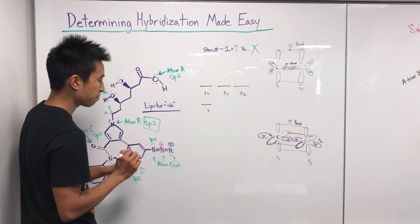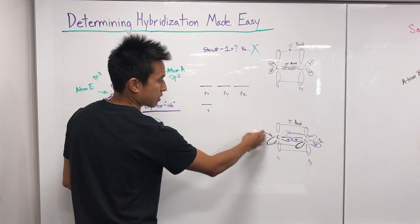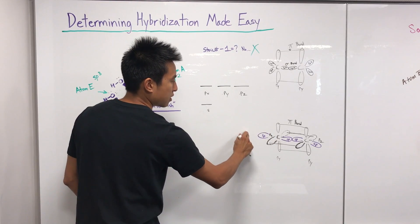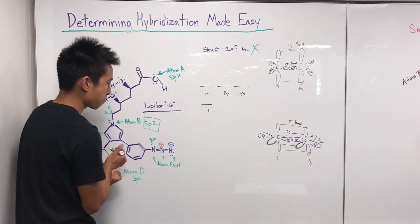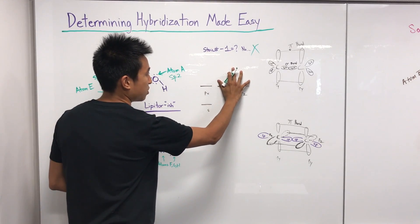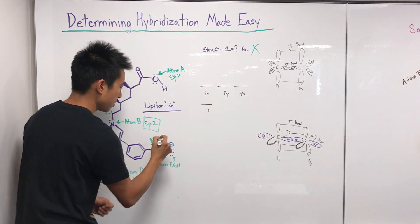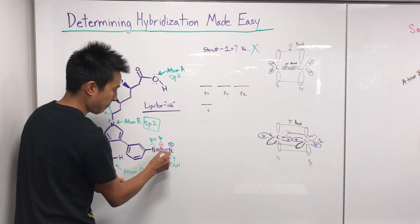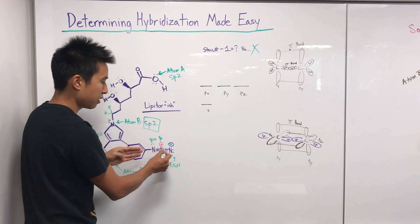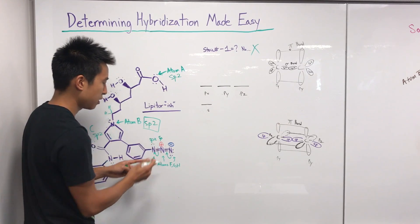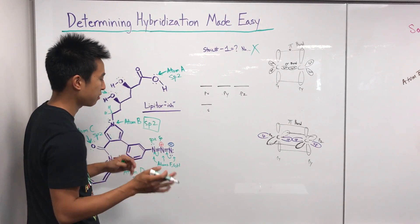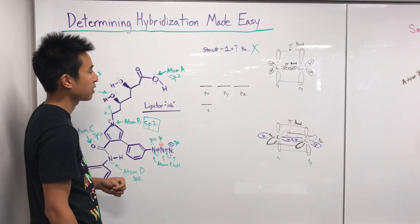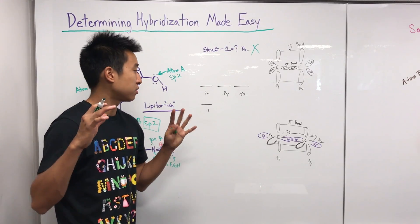But this central nitrogen has two pi bonds — one on each side — so it uses up two of its p orbitals. All that's left is s and one p, so this nitrogen is sp. And going back to the adjacent negative nitrogen: it can resonate in, pushing electrons to form a triple bond, so it can actually make a triple bond as well — meaning it is sp as well.